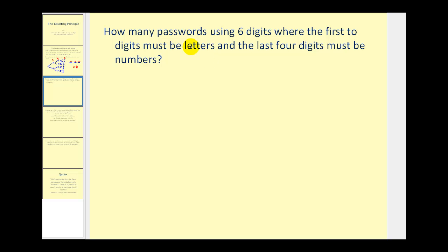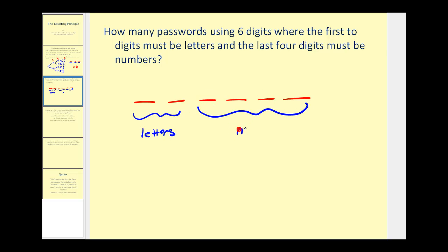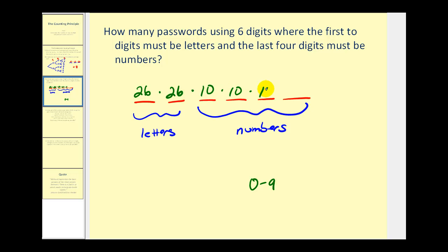Let's take a look at another question: how many passwords using six digits where the first two digits must be letters and the last four digits must be numbers? There are six independent events. The first two must be letters — there are twenty-six letters in the alphabet, so there are twenty-six ways the first letter can be chosen, and the same for the second. The last four must be numbers, and the digits zero through nine represent ten choices each, so it's times ten, times ten, times ten, times ten.